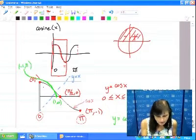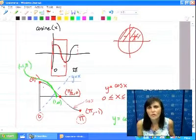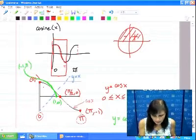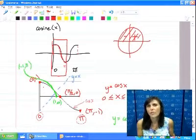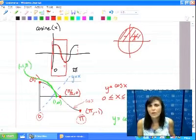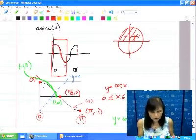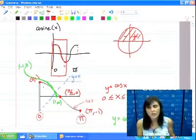These are the points of interest. The first one is (0, 1), because cosine of 0 is 1. The second one is cosine of π, which is -1. In the middle, cosine of π/2, that's 0. This curve is cosine x.